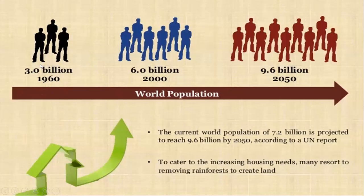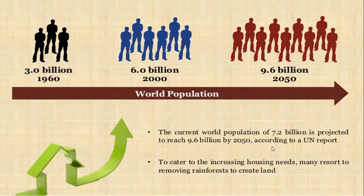In 1960, the number of humans was 3 billion, while in 2000 it was 6 billion. So in 2050, the number of humans or population will reach 9.6 billion — over 9 billion — according to a UN report. So increasing in number of humans will increase housing needs and will increase removing of rainforests.